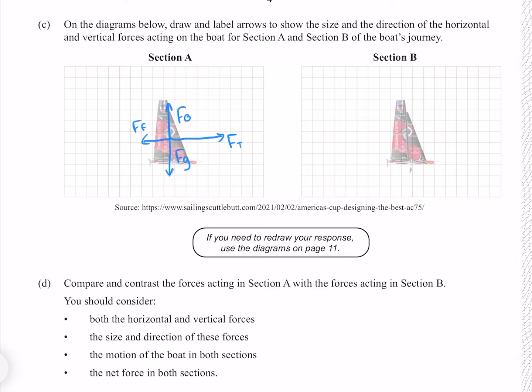In section B we have a constant speed, which means that all these forces must equal. And since our question has asked us specifically to label the arrows, we better make sure that we've been clear as to what each are.